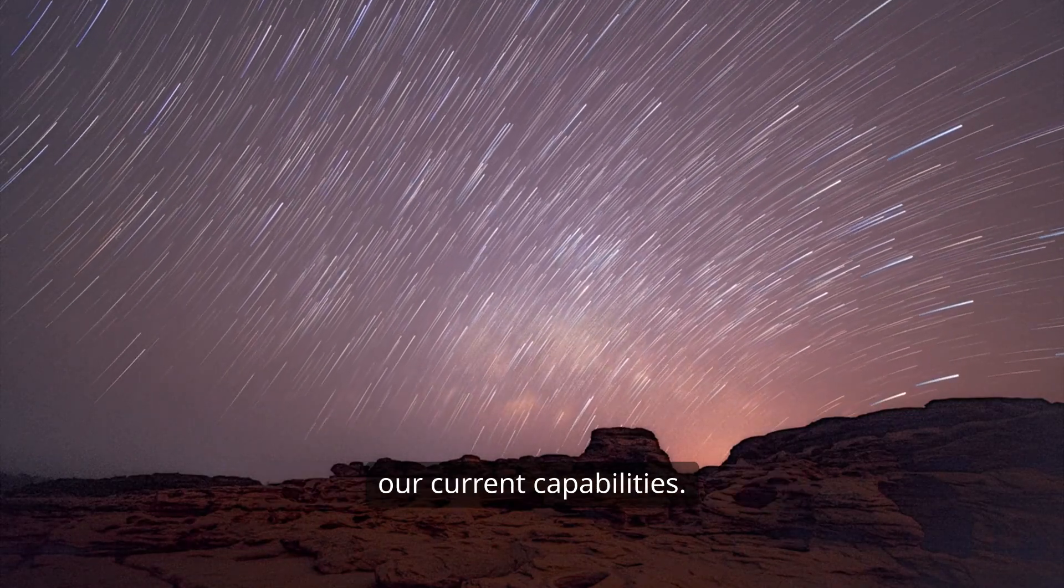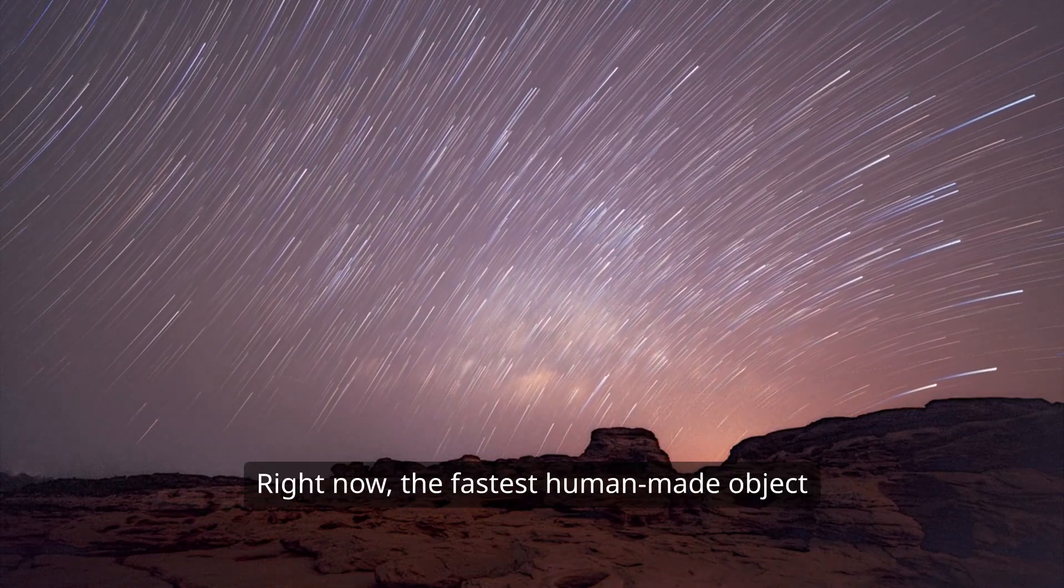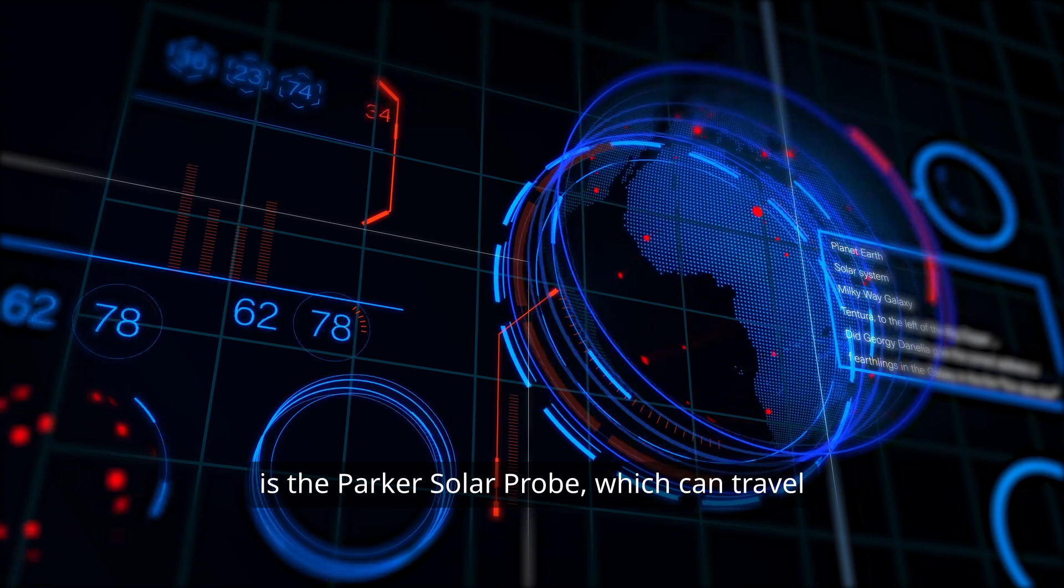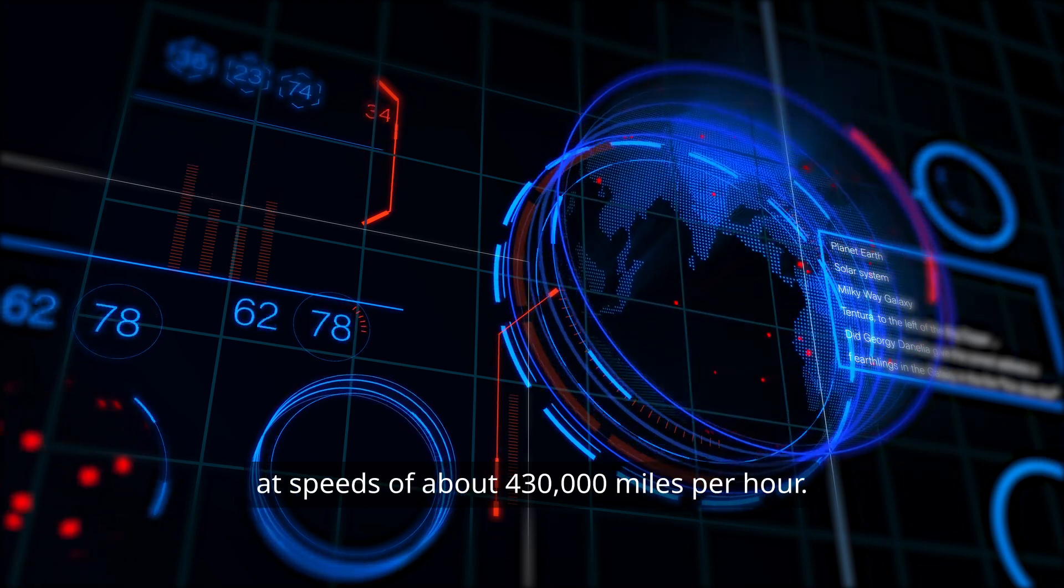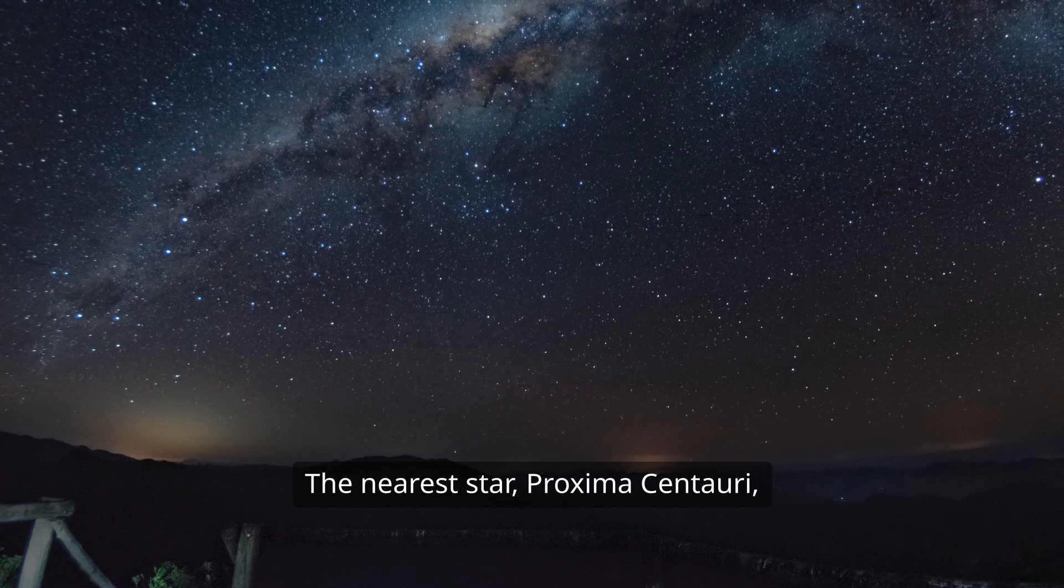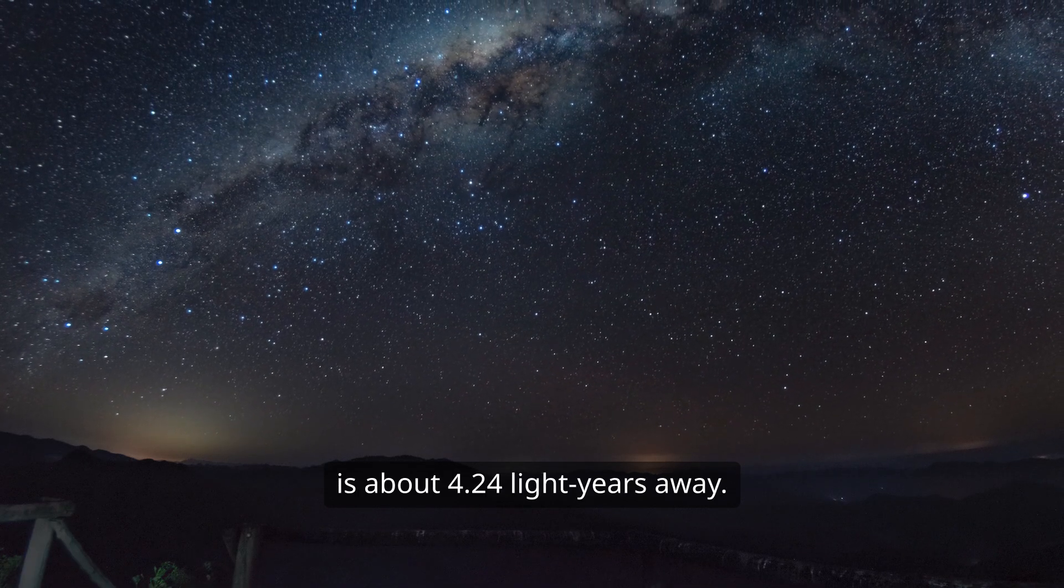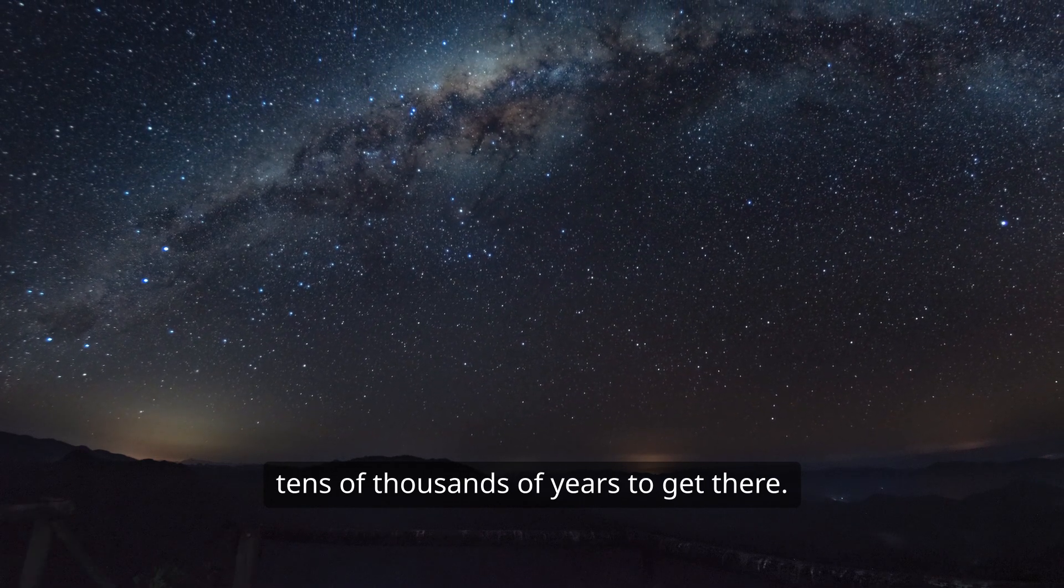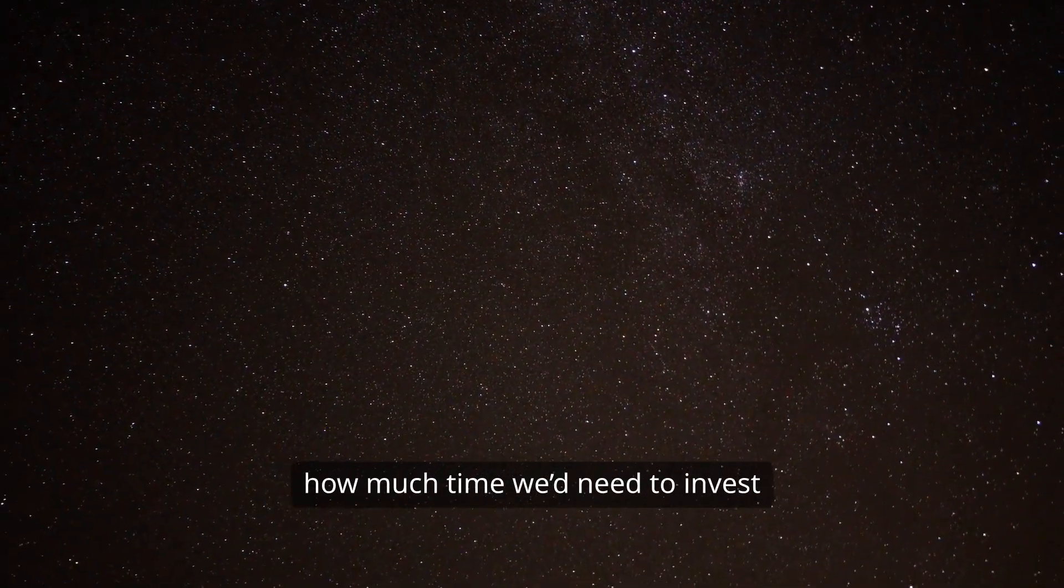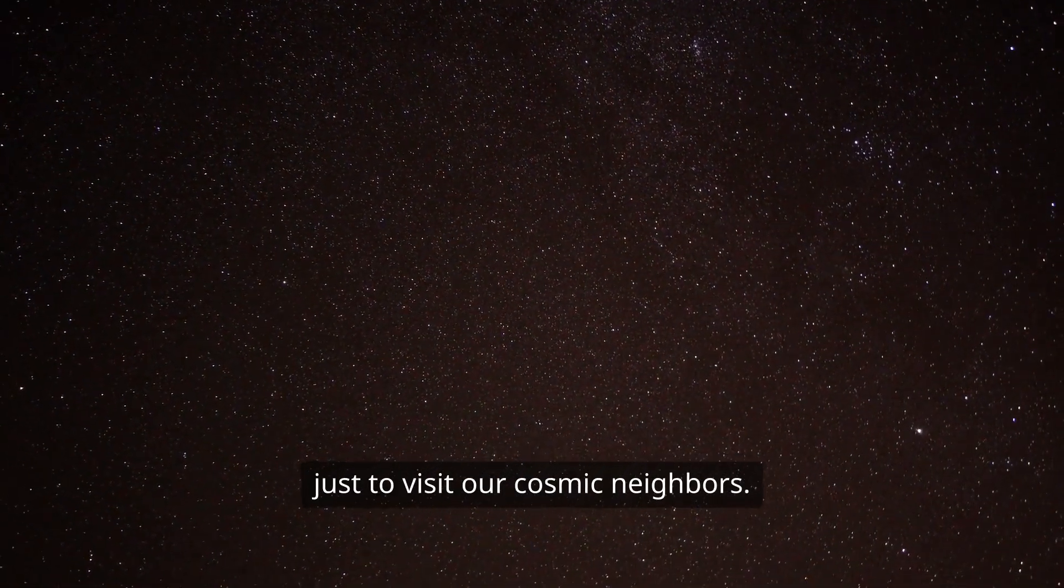Now, let's take a step back and consider our current capabilities. Right now, the fastest human-made object is the Parker Solar Probe, which can travel at speeds of about 430,000 miles per hour. That's impressive, but it's still a far cry from light speed. And while we're making strides in space exploration, we're still confined to our solar system. The nearest star, Proxima Centauri, is about 4.24 light-years away. At our current speeds, it would take tens of thousands of years to get there. It's mind-boggling to think about how much time we'd need to invest just to visit our cosmic neighbors.